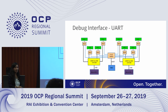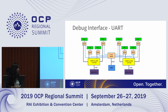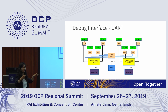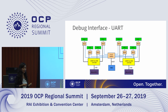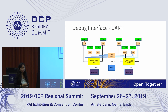UART is another debug interface — some OAM vendors use UART for debug. We have a UART switch connecting the BMC to different OAMs through the UART interface so the BMC can retrieve OAM information. We also reserved a micro USB interface so that when you have a physical connection, you can plug in a USB cable and access the OAM directly. You can either go through BMC for remote debug or through the physical interface for direct debug.